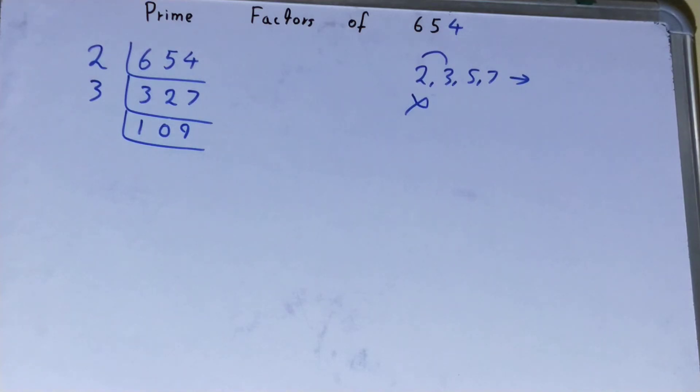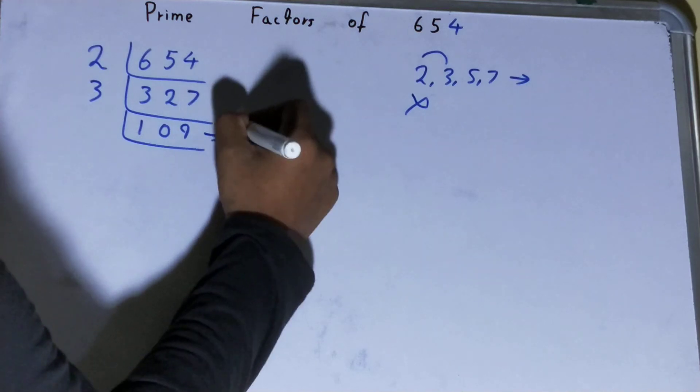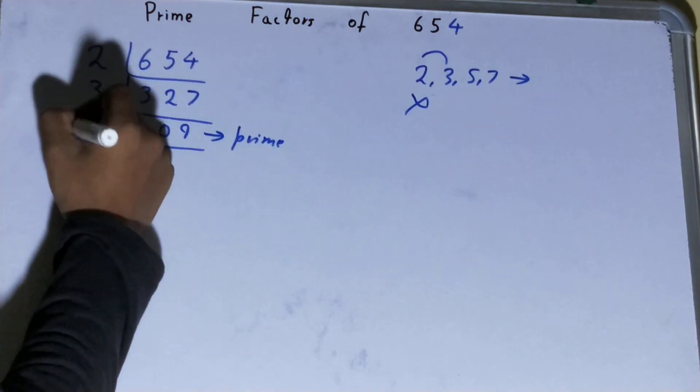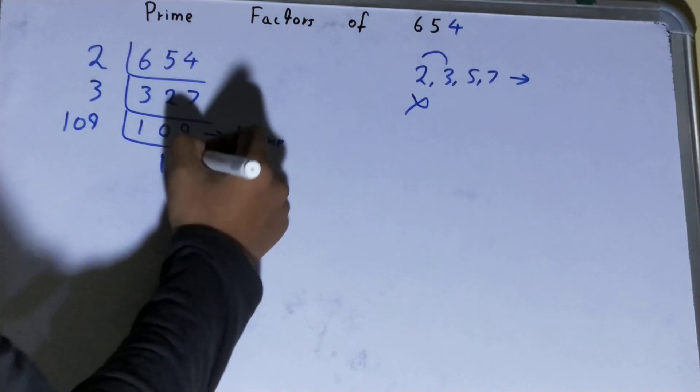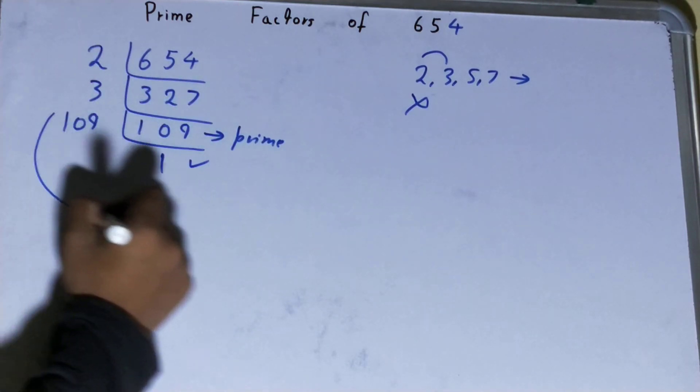109 is not divisible by any other prime number because 109 is prime itself. So to divide this 109, you need 109 on the left-hand side, and when you do so, you'll be left with one. Once you're left with one, the work is done.